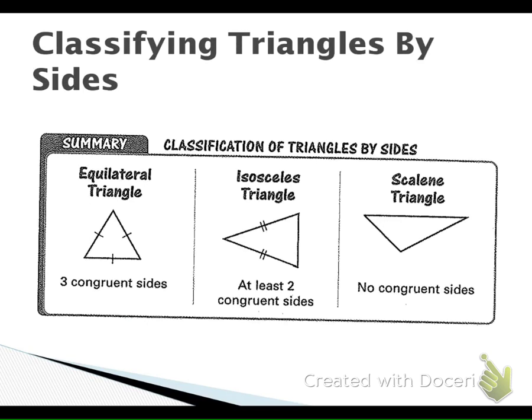So we can classify by sides. We have three types: equilateral with three congruent sides, isosceles with at least two congruent sides, and scalene which has no congruent sides.